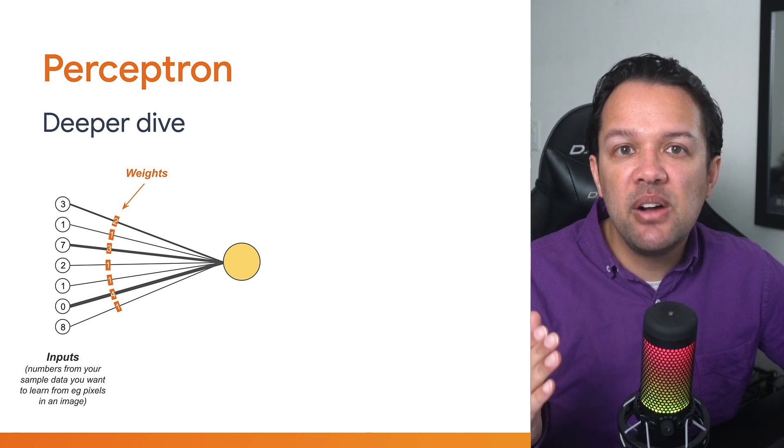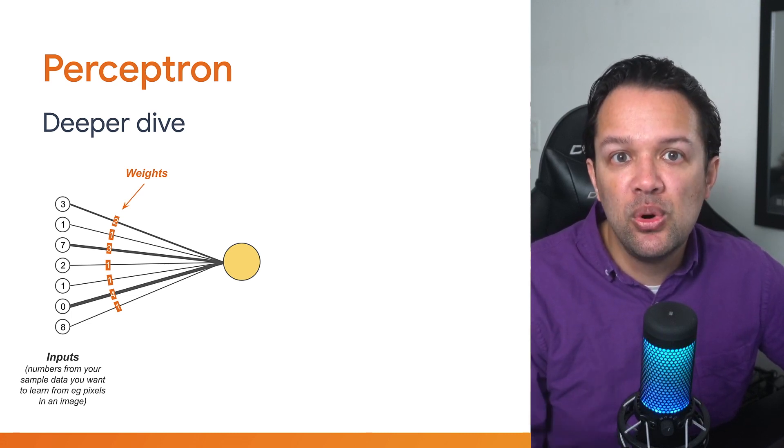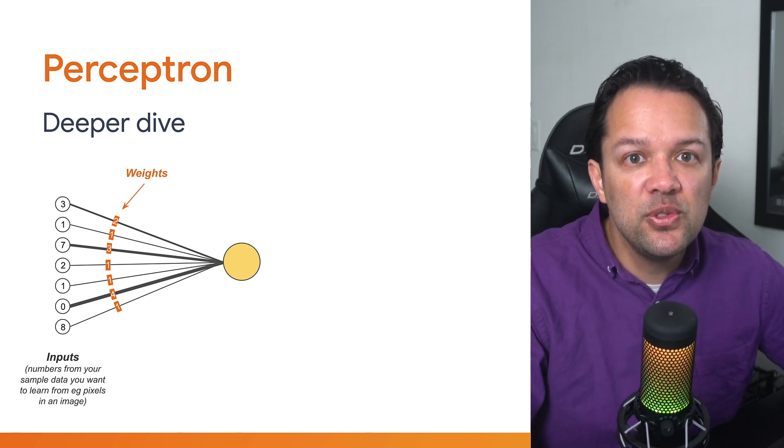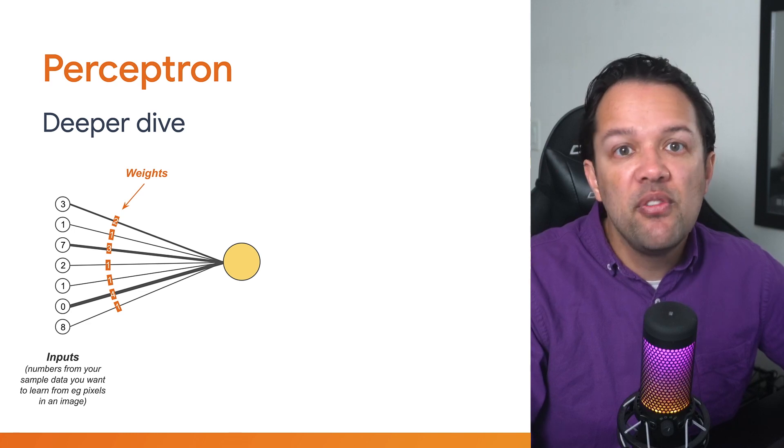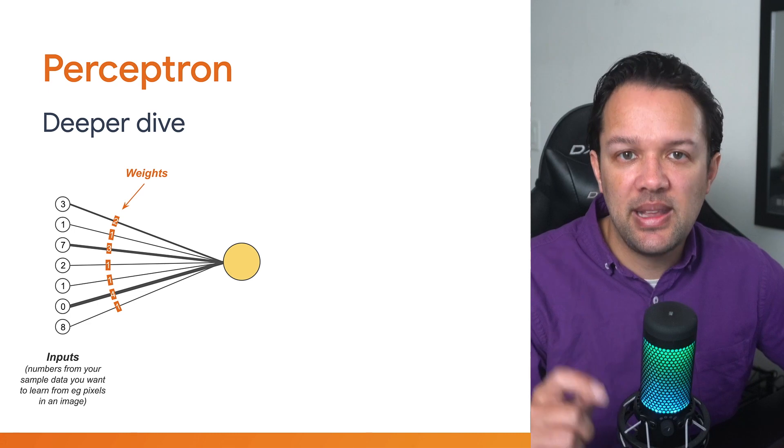These weights allow the neuron to amplify or reduce the value of each input if it decides that that input is more or less important respectively, in order to predict something useful when it trains itself. For now, just know that these are random numbers to start. You'll see how this enables it to learn later on.